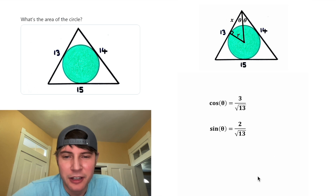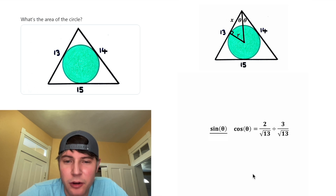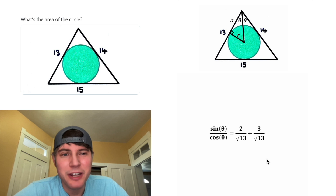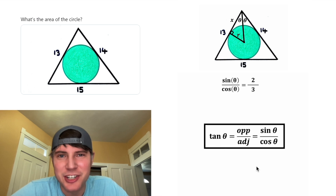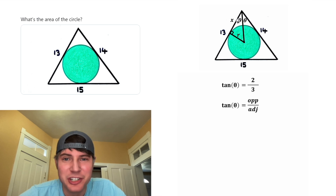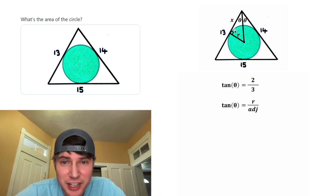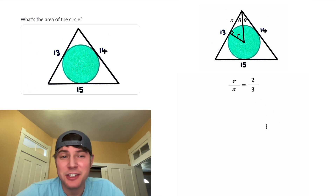There's one more thing we can do: divide sine theta by cosine theta, which gives us sine theta over cosine theta on the left. On the right, dividing fractions by multiplying by the reciprocal and cross-canceling, the root 13s cancel, leaving 2/3. Using our trig notes, sine over cosine is tangent theta, which also equals opposite over adjacent. The opposite of angle theta is R, and the adjacent is X, so tangent theta equals R over X equals 2/3. Let's box that.